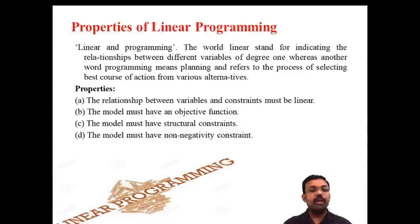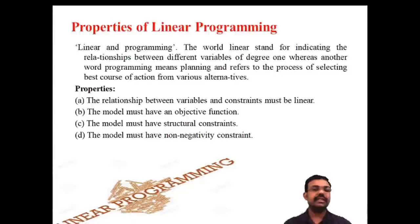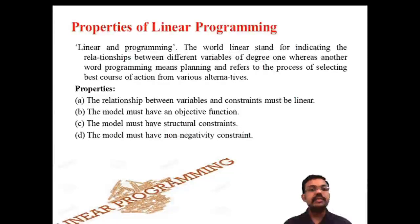The second property is that the model must have an objective function — either maximization of profit or minimization of loss. It focuses on an objective. The third property is that the model must have structural constraints. The constraints are the limitations, and the structural constraints are the indirect limitations.